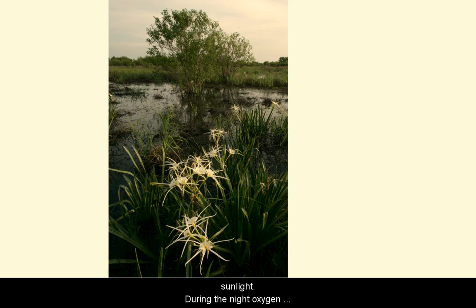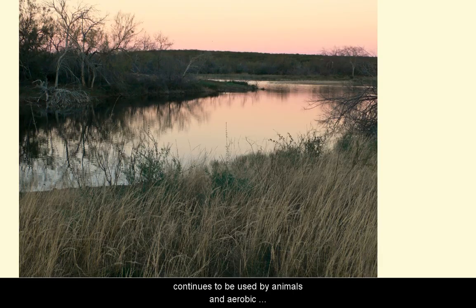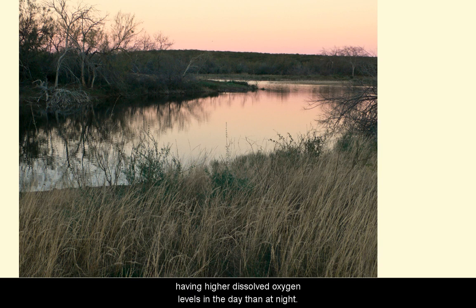Plants stop producing oxygen at night because photosynthesis requires sunlight. During the night, oxygen continues to be used by animals and by aerobic decomposition. This results in many ponds having higher dissolved oxygen levels in the day than at night.